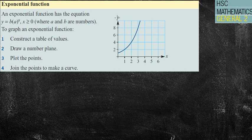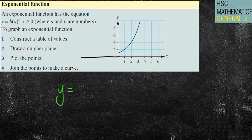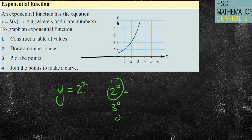Next we're looking at an exponential function. The graph is to the power of x. For example with y equals 2 to the power of x: 2 to the power of 1 is 2, 2 to the power of 2 is 4, 3 squared is 9. Anything to the power of 0 will always equal 1. So one of the key features of an exponential function is that it generally cuts the y-axis at 1.